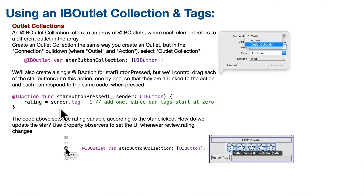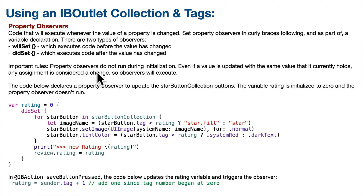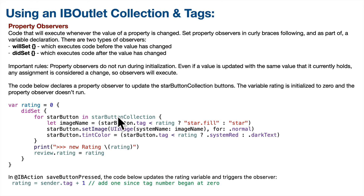How do we update the buttons? We could do it right in this function, but instead let's do it in a property observer — it gives us a bit more of a reuse advantage. First, at the top of the review detail table view controller, we'll create a rating property and initialize it to zero. Then in did set, we'll go through all of the buttons in the star button collection using a for loop. We'll check the tag — if it's less than the current rating, we'll set the star to star.fill, the filled-in star.